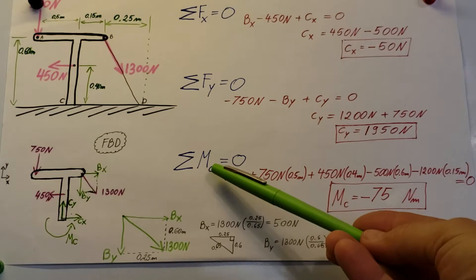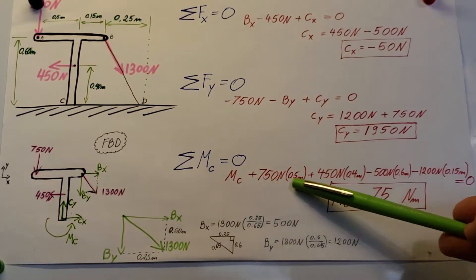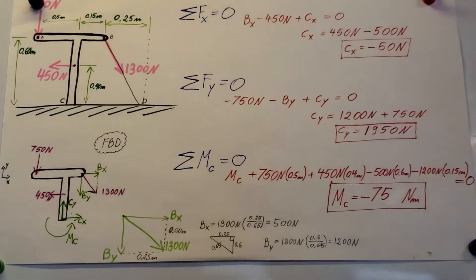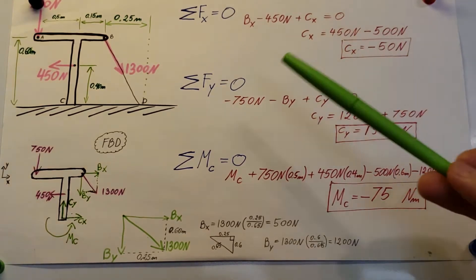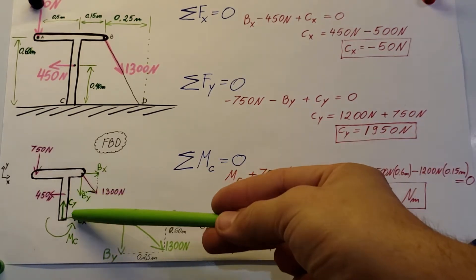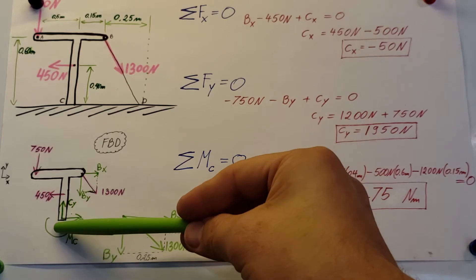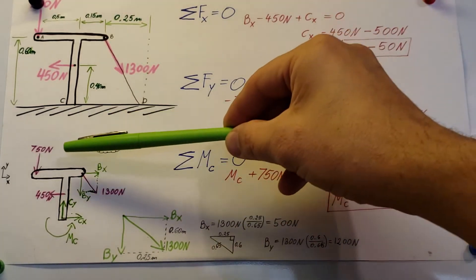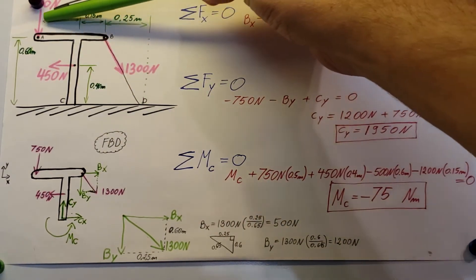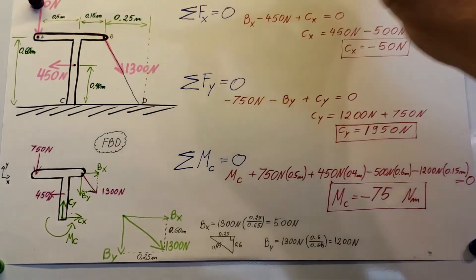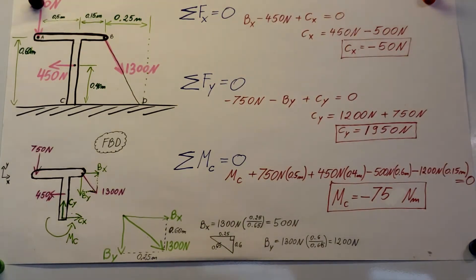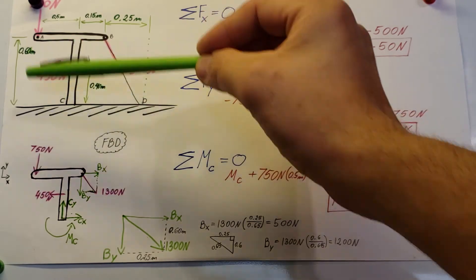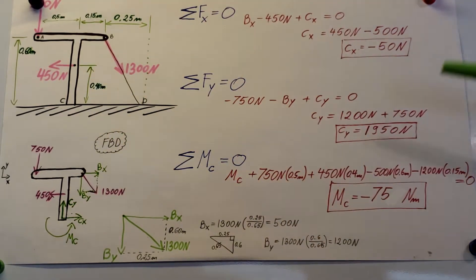Now, sum of moments at point C equals zero. We start with MC. Cx and Cy do not exert any moment since they pass through point C. The 750 newton force acts at a distance of 0.5 meters from C in the positive direction. The 450 newton force acts at a distance of 0.4 meters also in the positive direction.